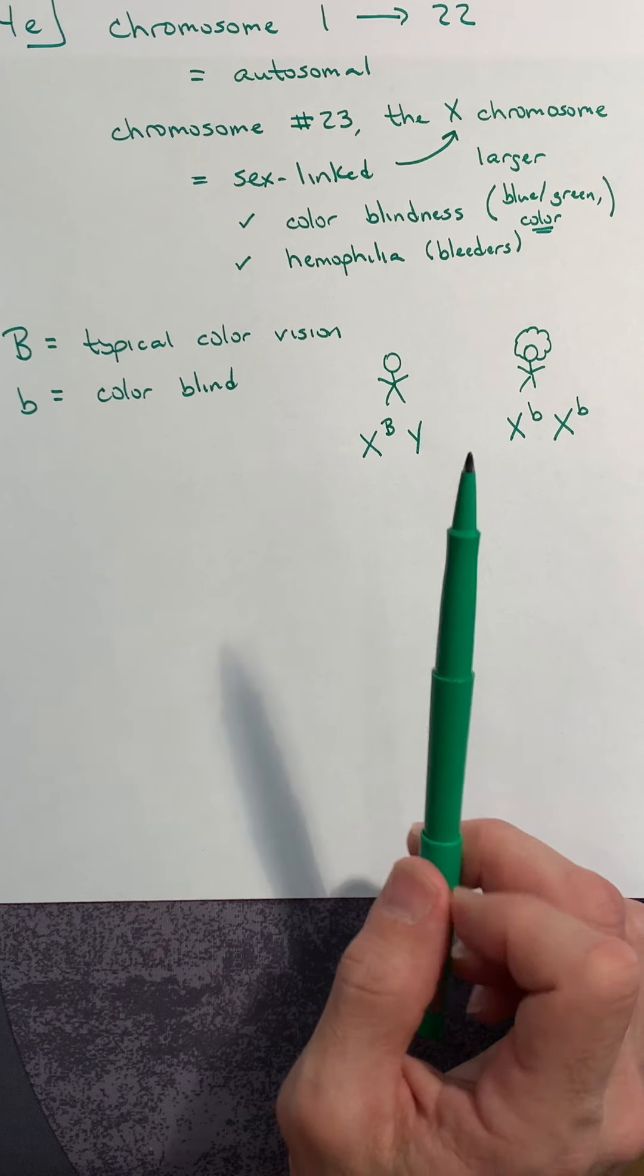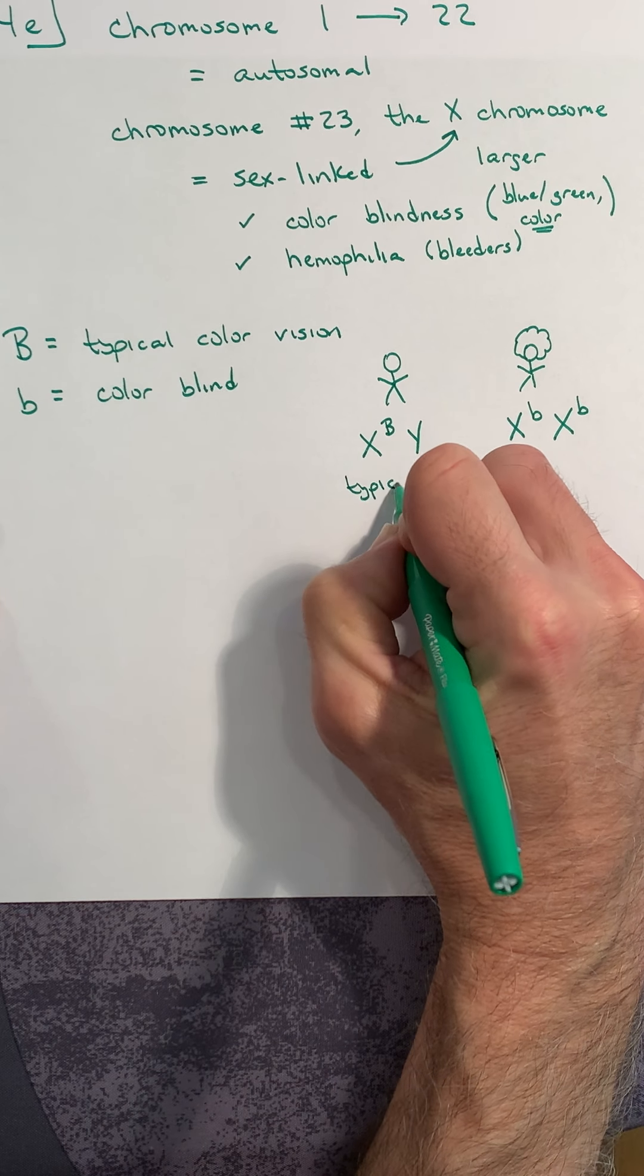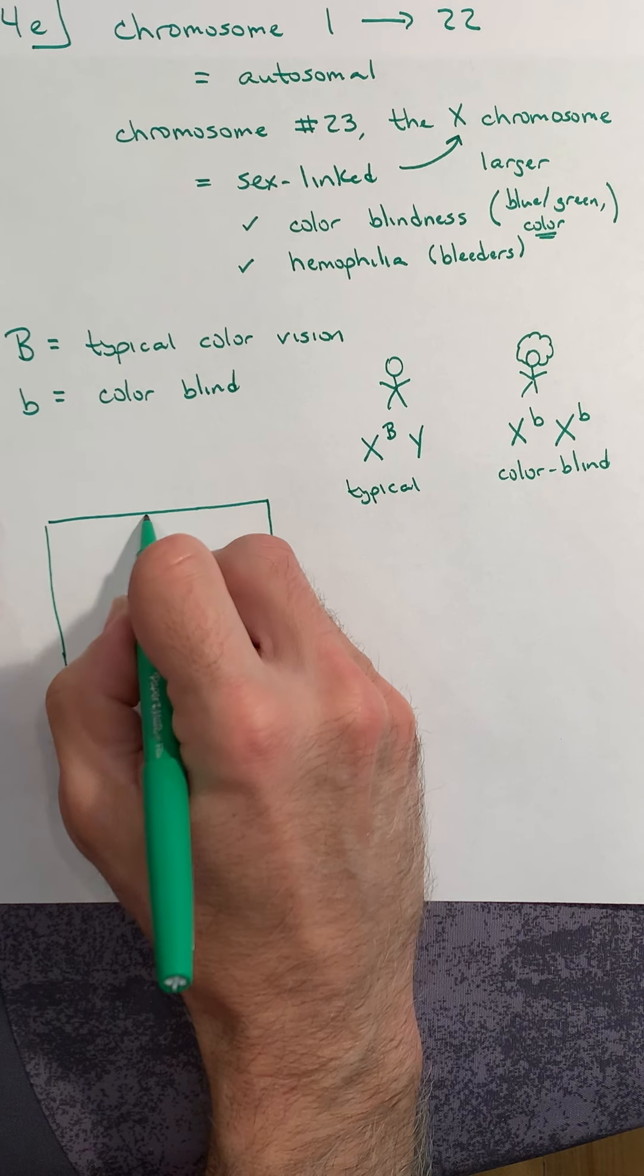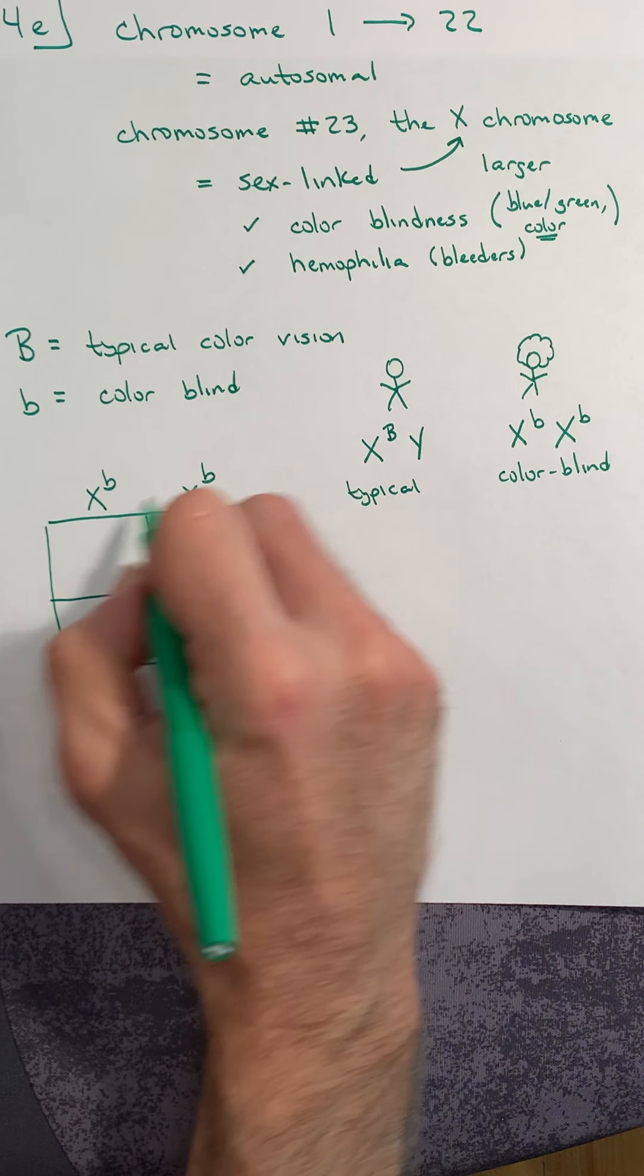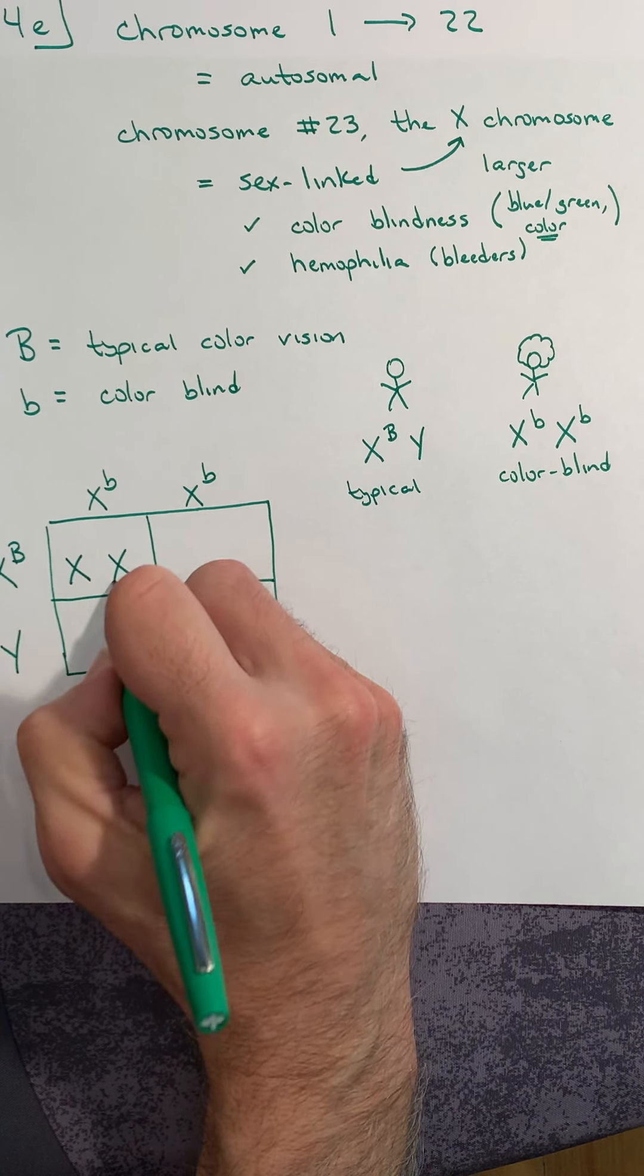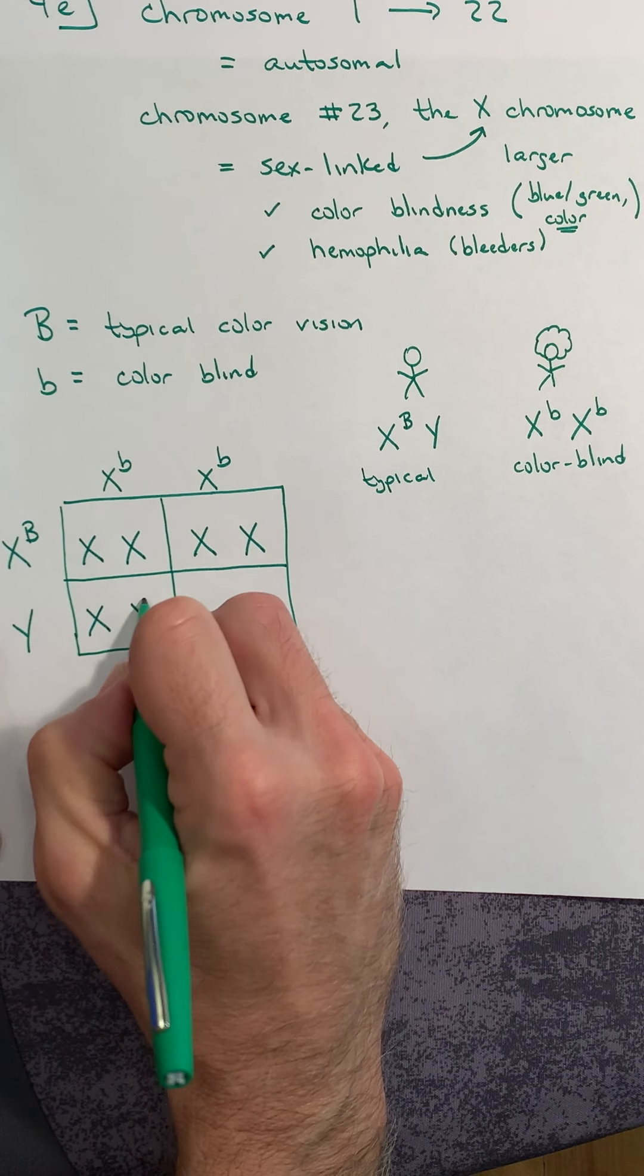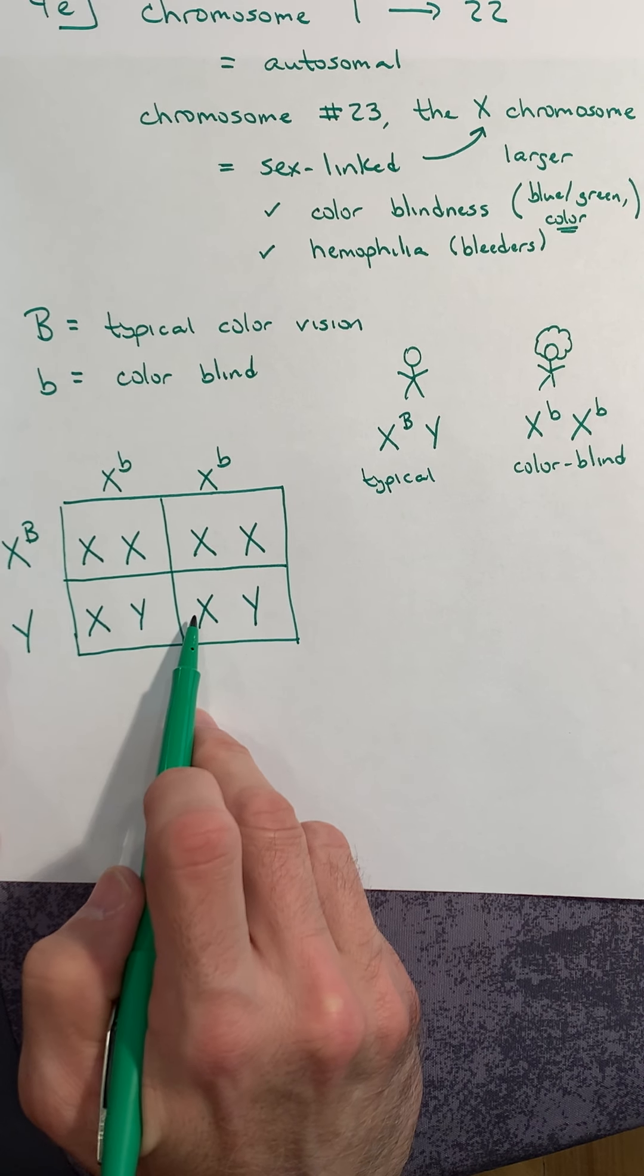Here is our cross: a typical-visioned male and a colorblind female. Same rules apply—it's still a Punnett square, still a two-by-two Punnett square. Let's put her contribution on the top and his contribution on the side. First things first: these top two rows are XX, so these are our daughters, whereas the bottom two rows are the possibilities for their sons.